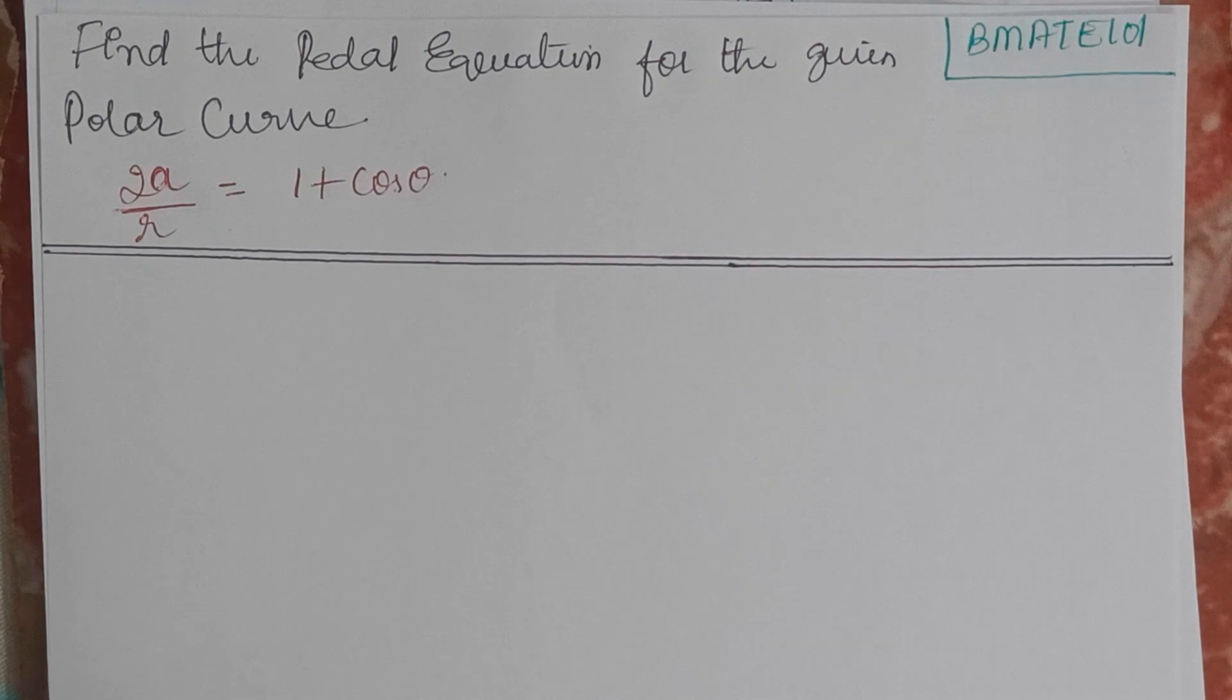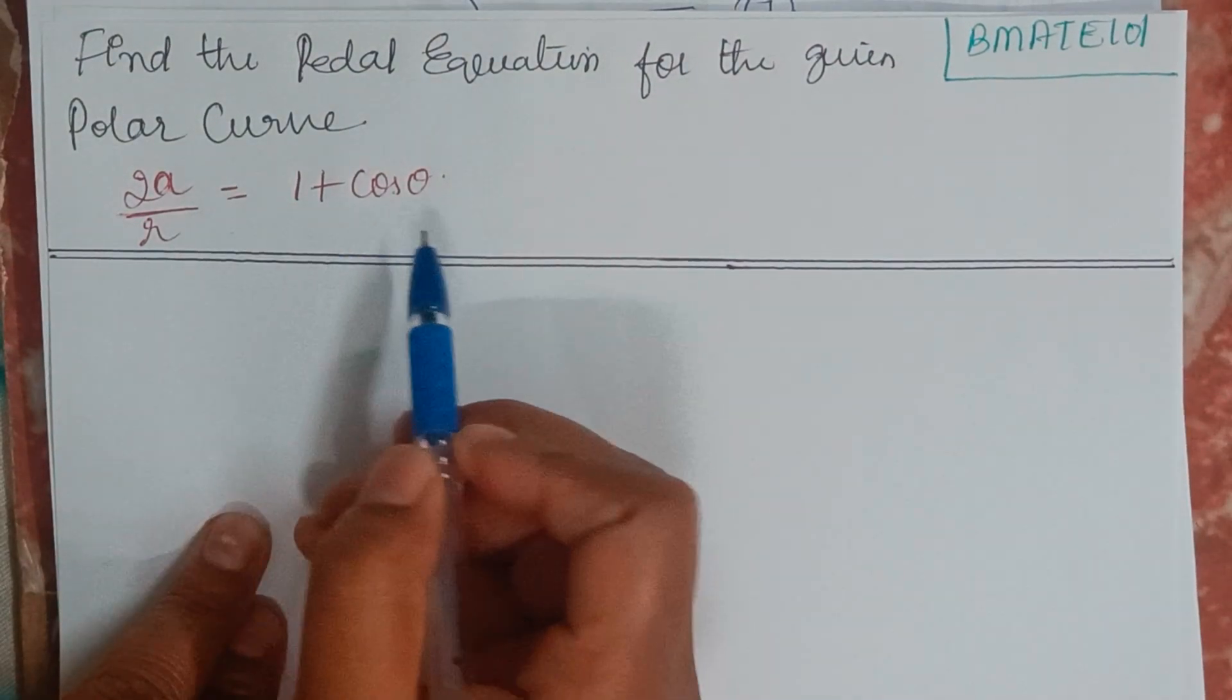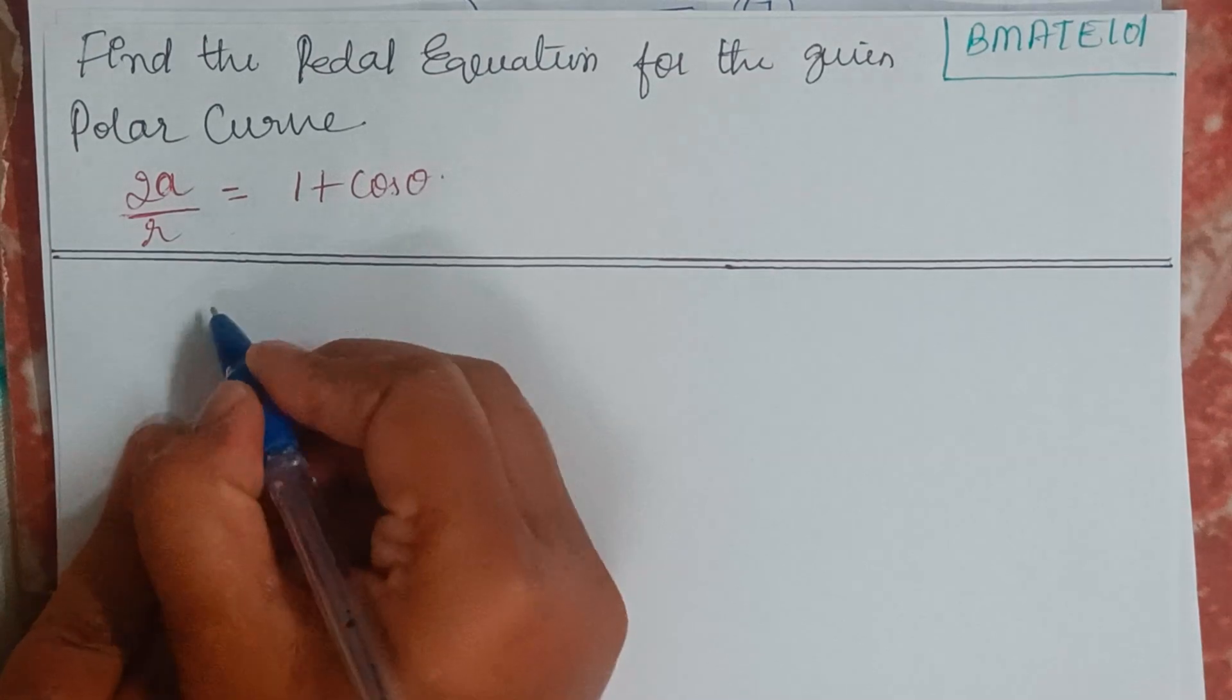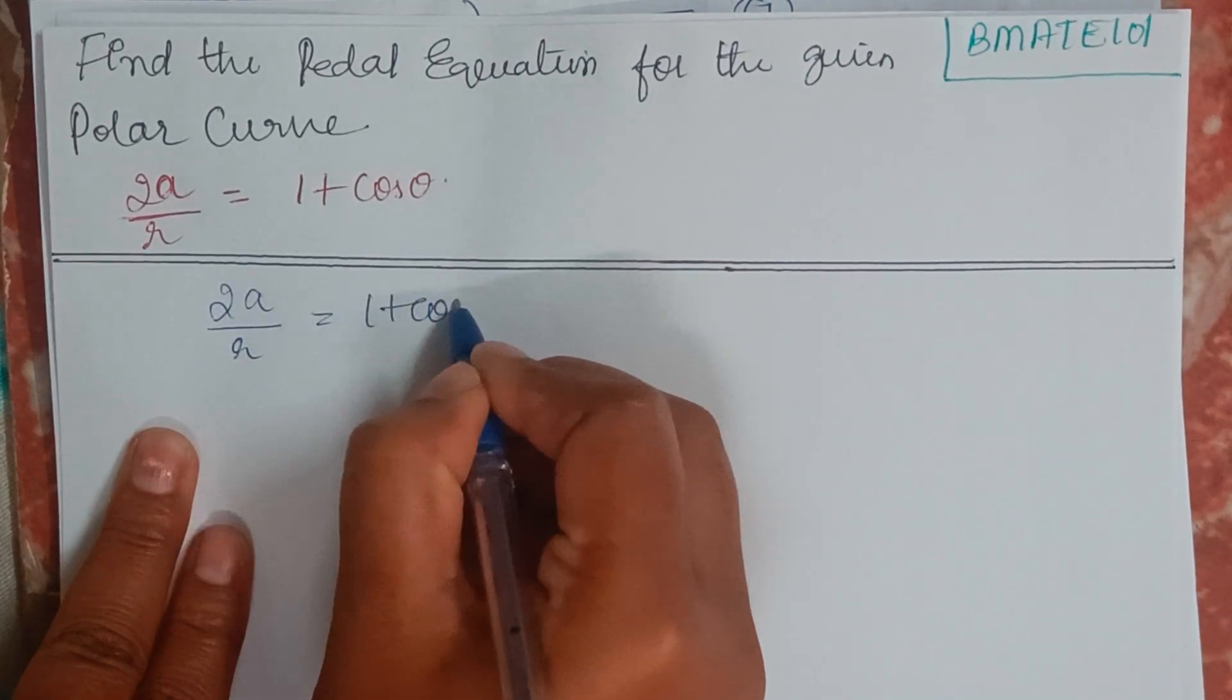In this video, we are going to find the pedal equation for the polar curve 2A by R equals 1 plus cos theta. So I'll rewrite the question here. 2A by R equals 1 plus cos theta.